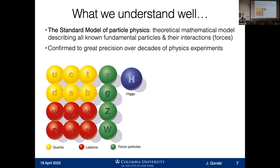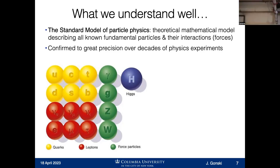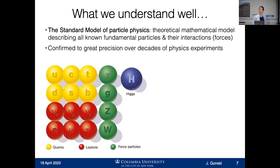This model is an incredible achievement for particle physics. We've been working on it for decades. The mathematical equations that began the standard model first came about in the 1950s and 60s. The model has been such an achievement because we've been able to confirm it in experiment, in data. The mathematical predictions can only get you so far if they don't describe reality. That back and forth between theoretical prediction and experimental confirmation is a really important feature of how we progress in this field.